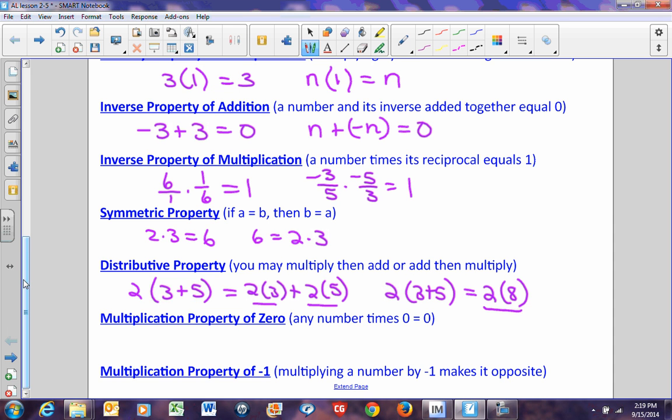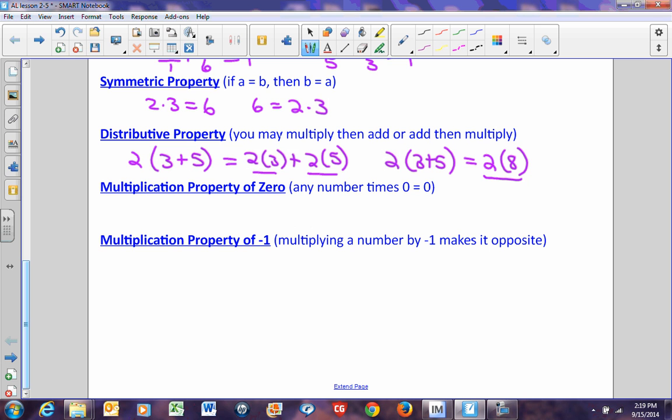The multiplication property of 0 says that any number times 0 is 0. No matter what the number is. If I have 3 and I multiply it by 0, I get 0. If I have negative 1 and I multiply it by 0, I still get 0. If I have q and I multiply it by 0, I get 0.